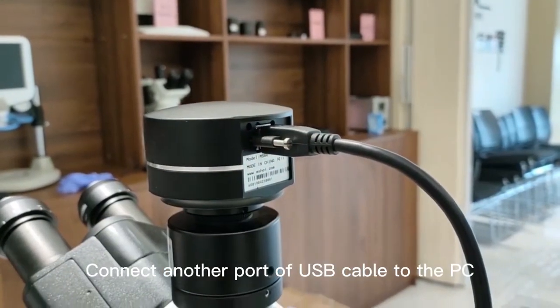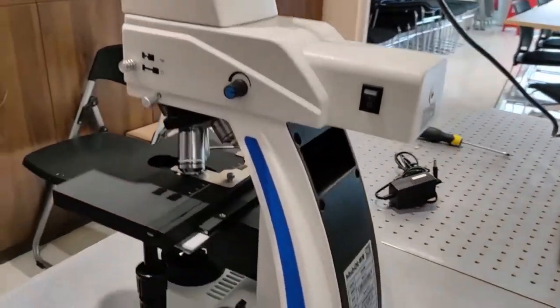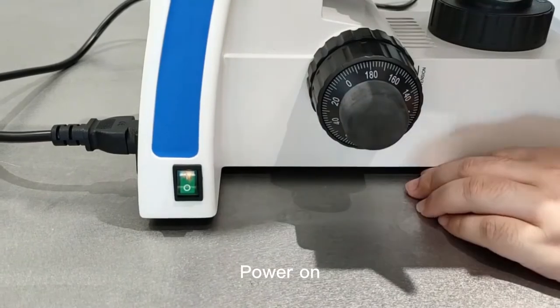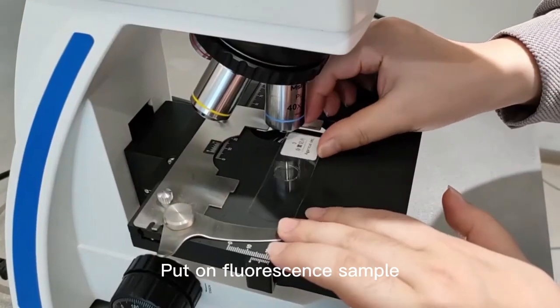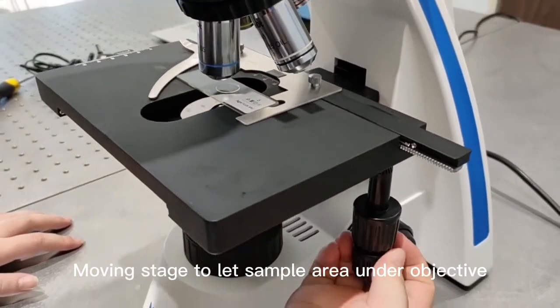Connect the other port of the USB cable to the PC. Connect the microscope power line. Power on. Place the fluorescence sample on the stage. Move the stage to light the sample area on the objective.